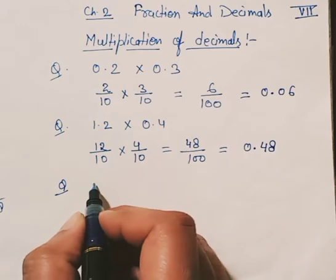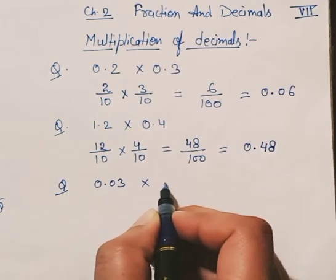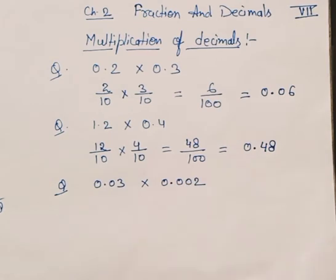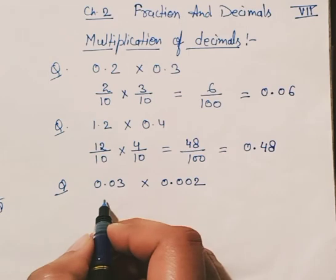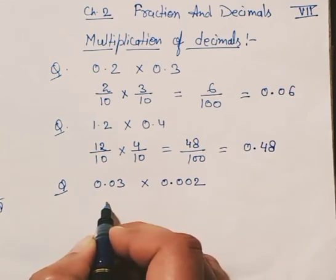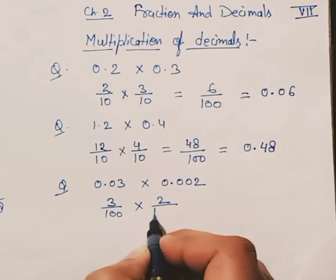Suppose you have two different terms: 0.03 and 0.002. To multiply these two numbers, first convert them into fractional form. It will be 3 upon 100 multiplied by 2 upon 1000.